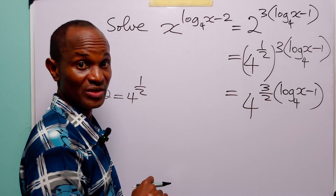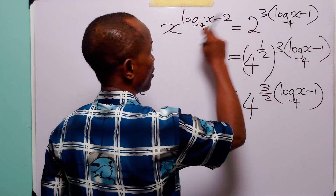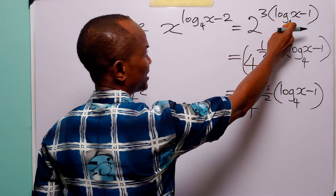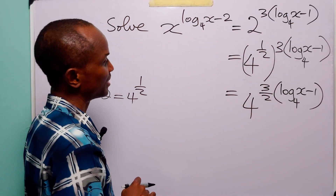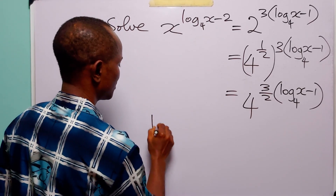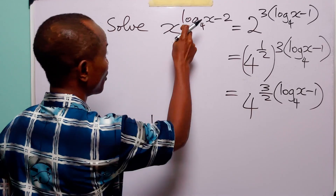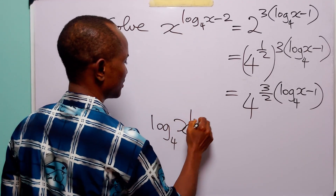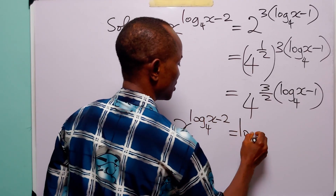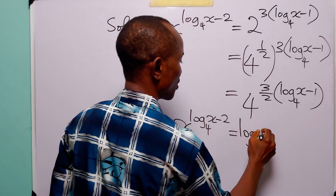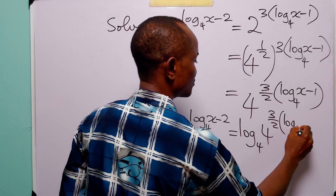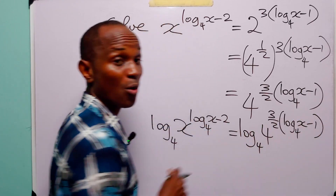Now the next step to solving this equation will be to take log of both sides. And since the question is given in base 4, we are going to continue working in base 4. So on the left hand side, we have log to base 4 of x to the power log to base 4 of x minus 2, equal to log to base 4 of 4 to the power 3 over 2 multiplied by log to base 4 of x minus 1.